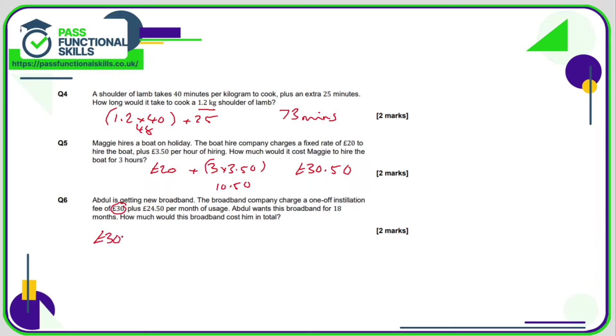Number six: there's an installation fee of £30, which is completely unavoidable, and then 18 months at £24.50 per month. So on top of the £30, it's going to be 18 lots of £24.50. Eighteen times £24.50 is £441. Add on the installation fee of £30—that comes to a grand total of £471.